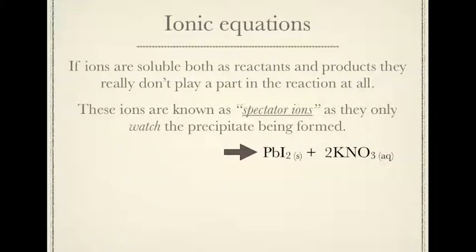So, ionic equations basically show you what a reaction would look like if we have, it only shows you what's involved in the reaction. Basically, if ions are soluble as both reactants and products, technically they don't really play a part in the reaction at all, they're kind of just hanging around, watching what's going on. These ions are known as spectator ions because they only watch the precipitate being formed.